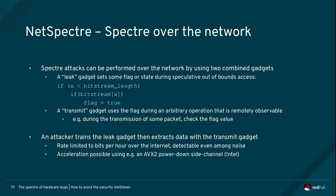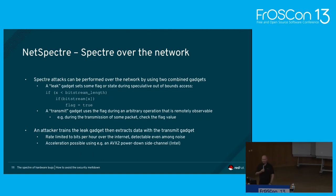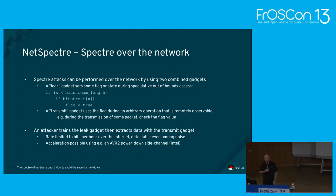NetSpectre is Spectre over the network. I have a leak gadget and a transmit gadget: a piece of code that alters the microarchitectural state — loads something into the cache like a Spectre gadget — and then another piece of code does something that transmits over the network that I can measure remotely. Using this attack I can leak a few bits per hour and perform a Spectre attack over the network.